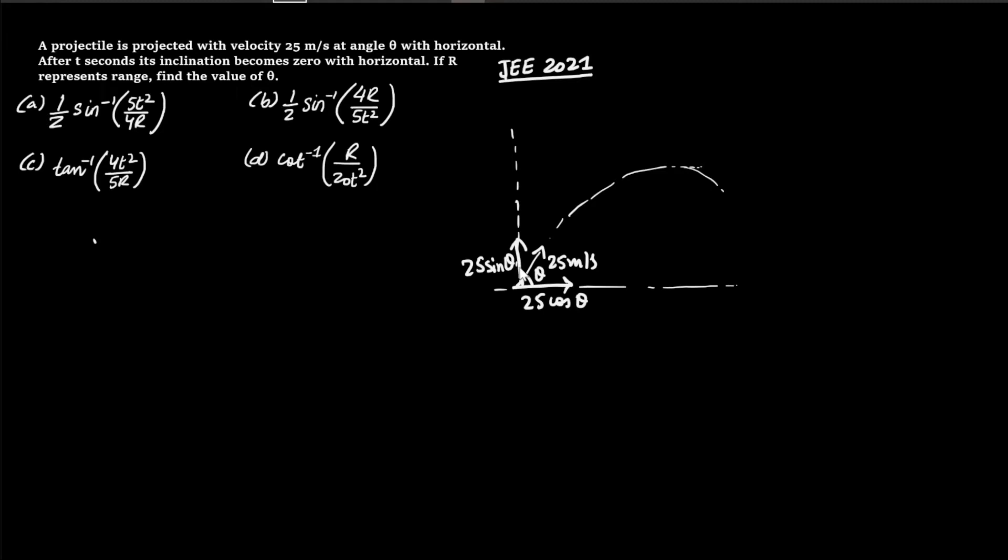Now at the maximum height the inclination is 0. That is at time t. So at time t where the inclination is 0, it will still have horizontal velocity 25 cos theta and at that maximum height inclination is 0.